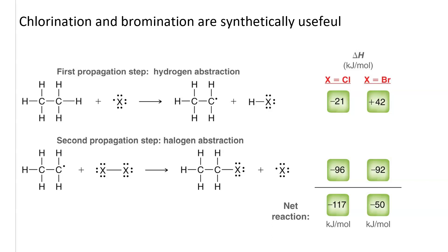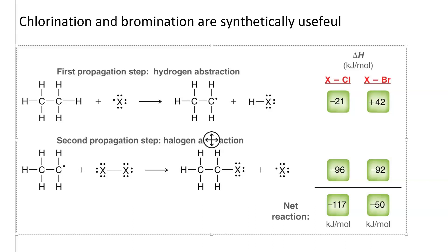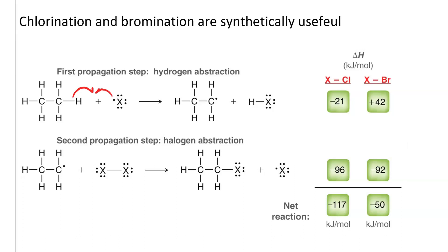Now, say we're dealing with halogenation of ethane. The first step for chlorination will be exothermic — this is hydrogen abstraction, where the halogen abstracts a hydrogen from the ethane and creates an ethyl radical and a haloacid. It's exothermic for HCl because the HCl bond is strong. But it's endothermic for bromine because the HBr bond is weaker. In the second propagation step, the ethyl radical abstracts halogen from another molecule of halogen, which is exothermic for both.